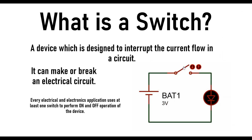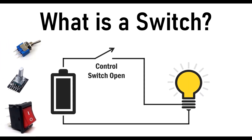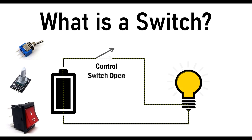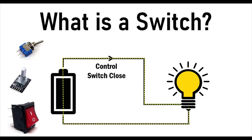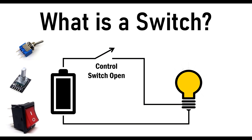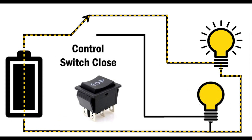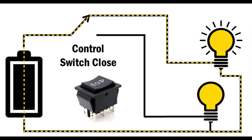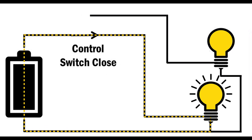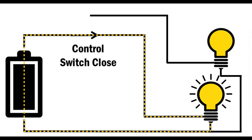A switch can perform two operations: first, fully on, which means close the contact; and second, fully off, which means open its contact. When the contacts of the switch are closed, the switch creates a closed path for electrical current to flow, and hence the load consumes power from the source. When the contacts of a switch are open, no power will be consumed by the load. Another important function of a switch is to divert the flow of electrical current in the given circuit. So when the switch is in position one, lamp one is turned on, while in position two, the second lamp turns on.